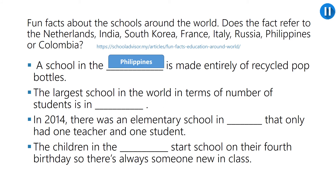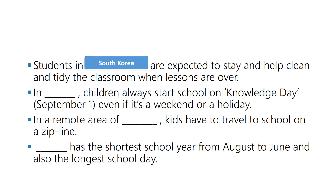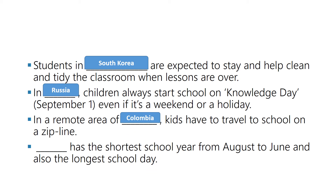A school in the Philippines is made entirely of recycled pop bottles. The largest school in the world in terms of number of students is in India. In 2014, there was an elementary school in Italy that only had one teacher and one student. The children in the Netherlands start school on their fourth birthday, so there's always someone new in class. Students in South Korea are expected to stay and help clean and tidy the classroom when lessons are over. In Russia, children always start school on Knowledge Day, September 1st, even if it's a weekend or a holiday. In a remote area of Colombia, kids have to travel to school on a zip line. France has the shortest school year, from August to June, and also the longest school day.